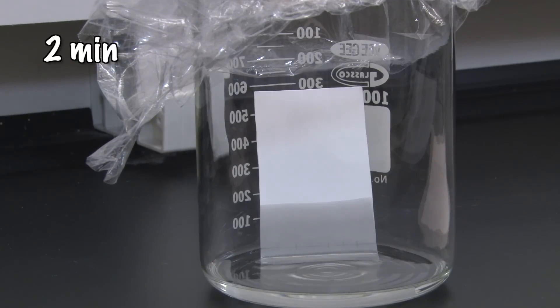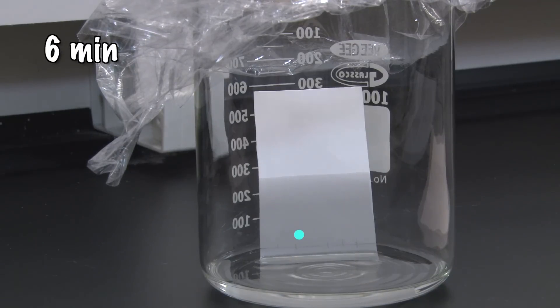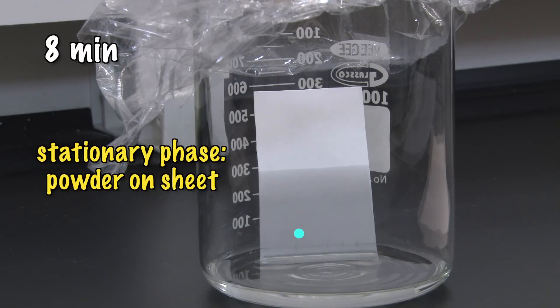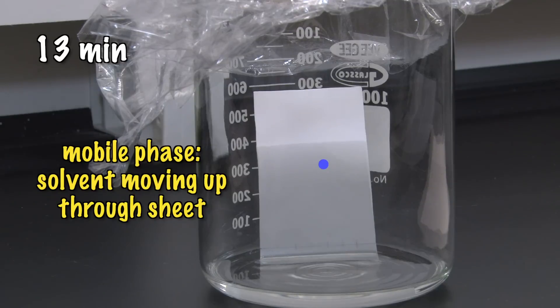The solvent will slowly wick up through the sheet, carrying the applied samples along with it, but different substances climb the sheet at different rates. Some substances are more attracted to the stationary phase, the powder on the sheet, so they'll travel slowly. Some are more attracted to the mobile phase, the solvent, so they'll travel more quickly.